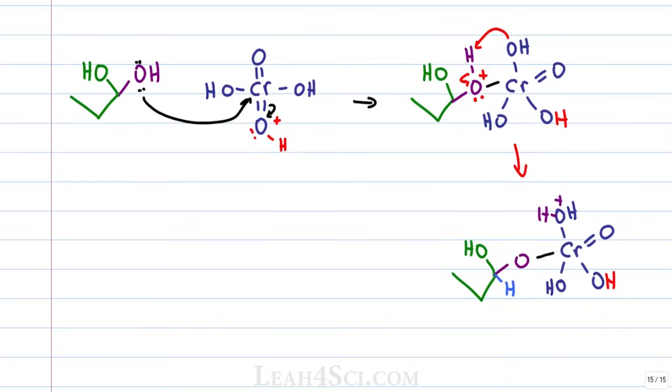We still have an alpha hydrogen, so we show a water molecule solution grabbing that hydrogen, collapsing the electrons between carbon and the chromate ester oxygen and breaking off the entire chromium complex. This gives me a final product with a double bond between carbon and the oxygen we just reacted and a single bond between the other oxygen on the molecule.